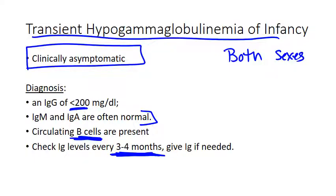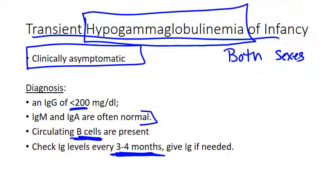Possible etiologies of transient hypogammaglobulinemia include transplacental maternal antibodies against fetal allotypic determinants or a lack of helper cells, which could lead to a more prolonged hypogammaglobulinemic period. If treatment is needed, check quantitative immunoglobulins every three to four months and give gamma globulin replacement if the patient is having really severe infections.